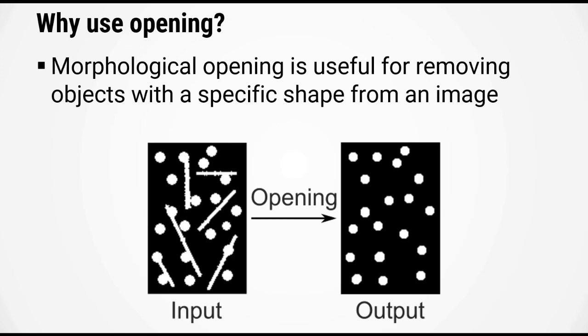And finally morphological opening can be really useful for removing objects in your mask with a specific shape. So for example in this image here the input image consists of a bunch of circles and lines. If we're opening the morphological image with the correct structuring element we can preserve the circles but remove the lines.